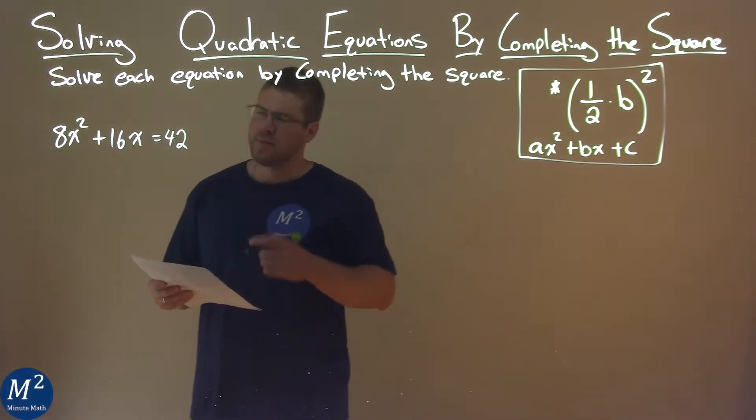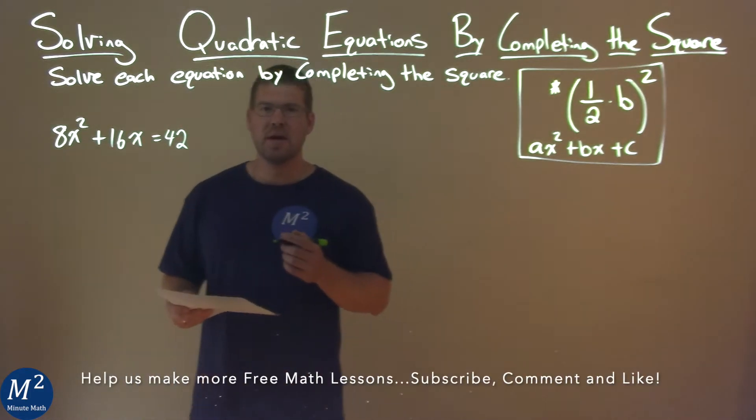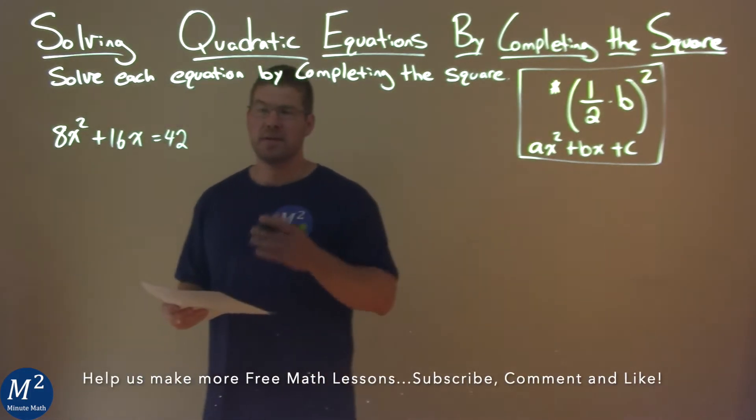We're given this problem right here: 8x squared plus 16x equals 42, and we need to solve this by completing the square.